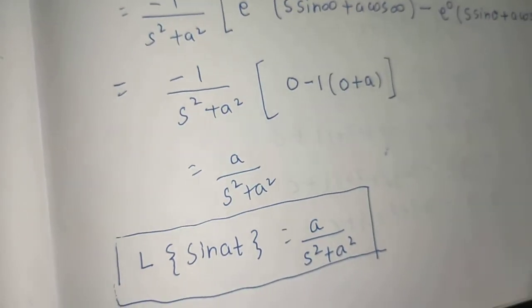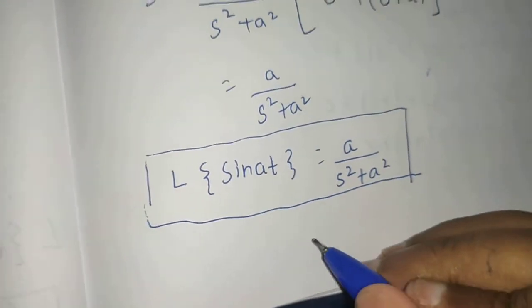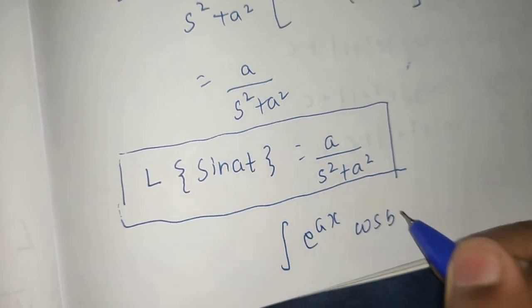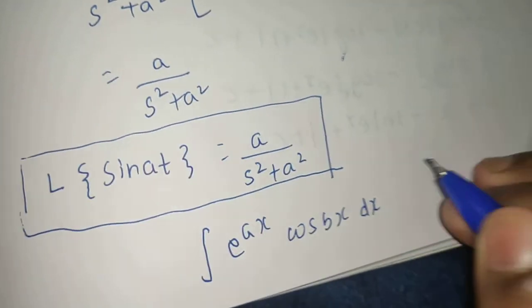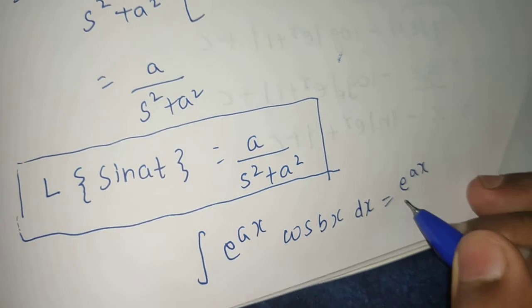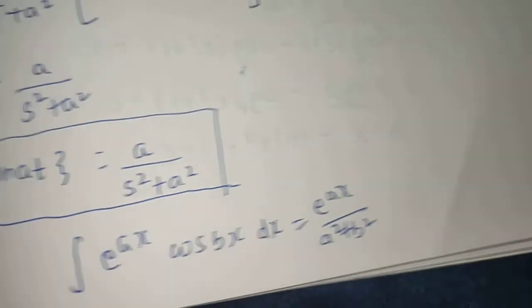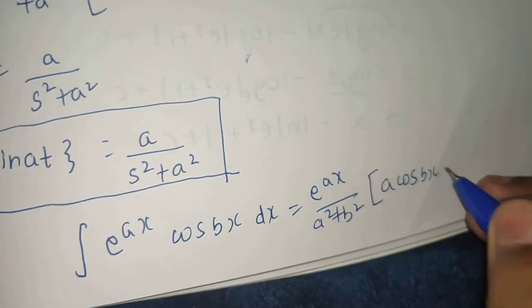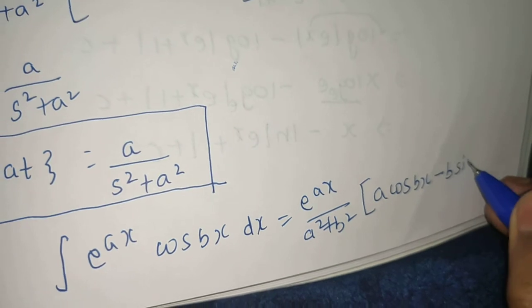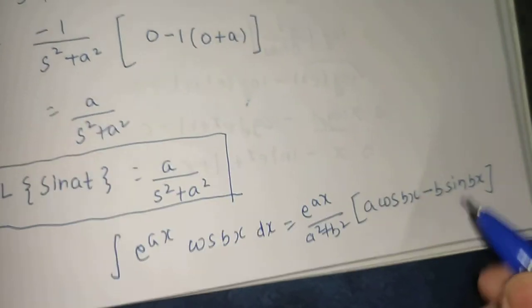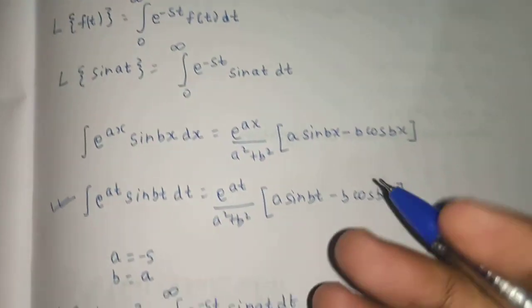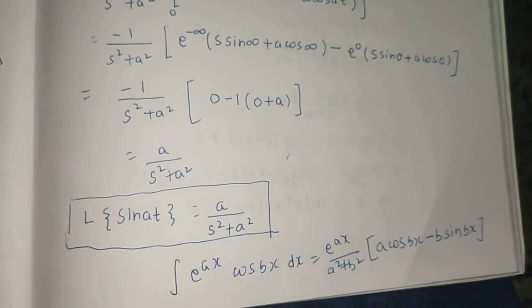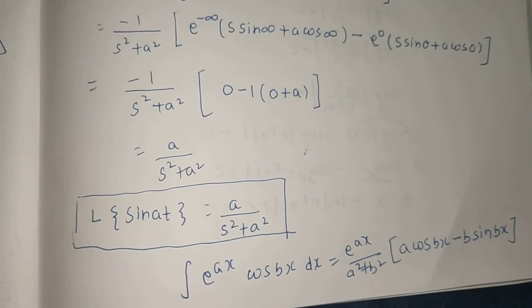Similarly you can try for cosine as well. For that I am giving you the formula: the integral of e to the power ax times cos bx dx equals e to the power ax divided by a squared plus b squared, times the quantity a cos bx minus b sine bx. You can use this formula and apply the same method to solve that particular Laplace transformation problem. I hope you will be able to solve that, and if not, we will see that in the next video. Thank you.